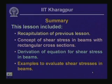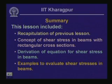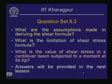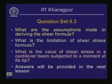To summarize this lesson: we recapitulated the previous lesson, studied the concept of shear stress in beams with rectangular cross sections, derived the equation for shear stress in beams (tau = VQ/IB), and worked through examples evaluating shear stresses. Questions for next time: What are the assumptions made in deriving the shear formula? What is the limitation of the shear stress formula? What is the value of shear stress in a cantilever beam subjected to a moment at its tip?